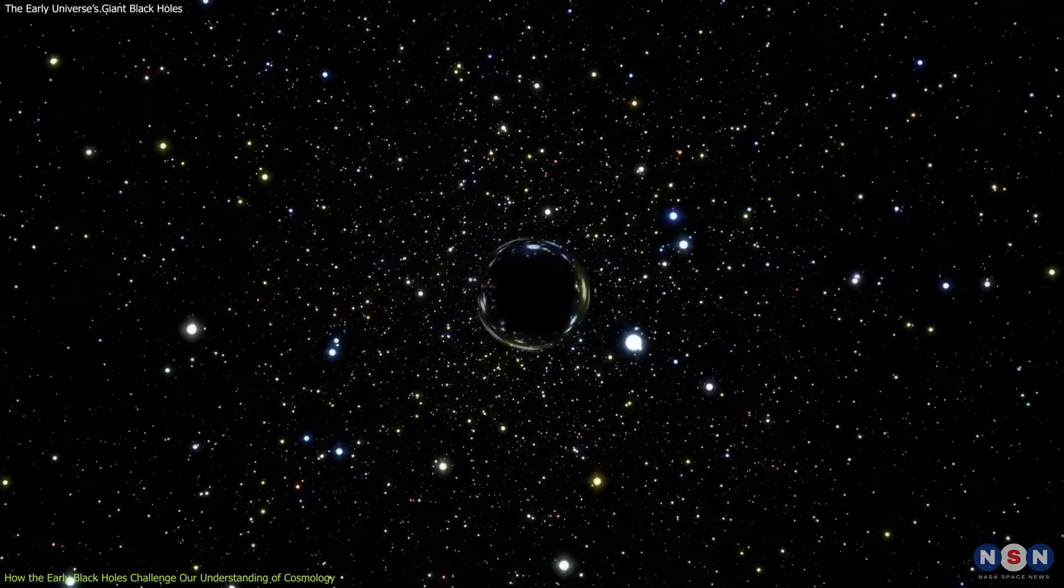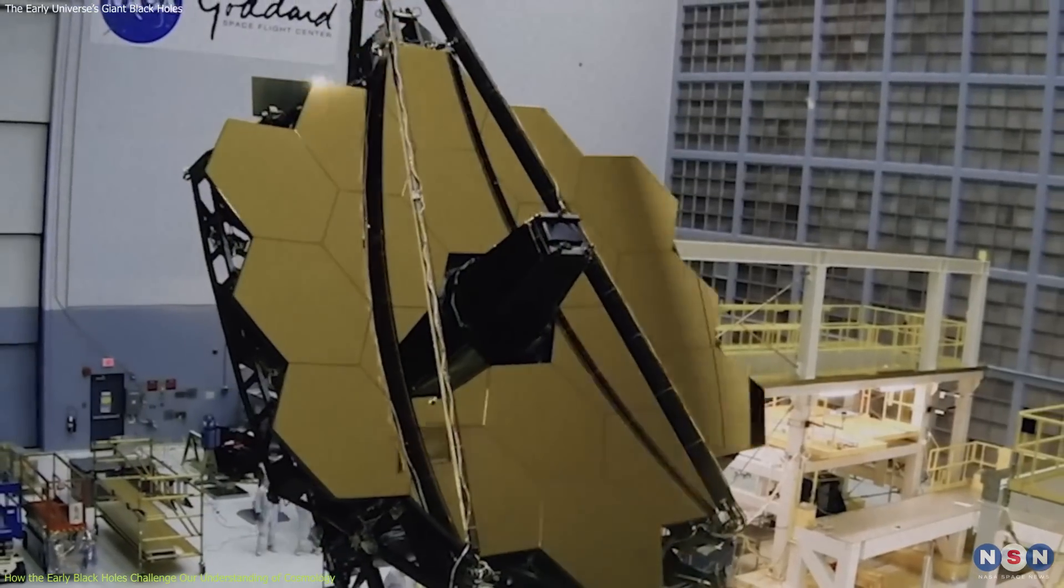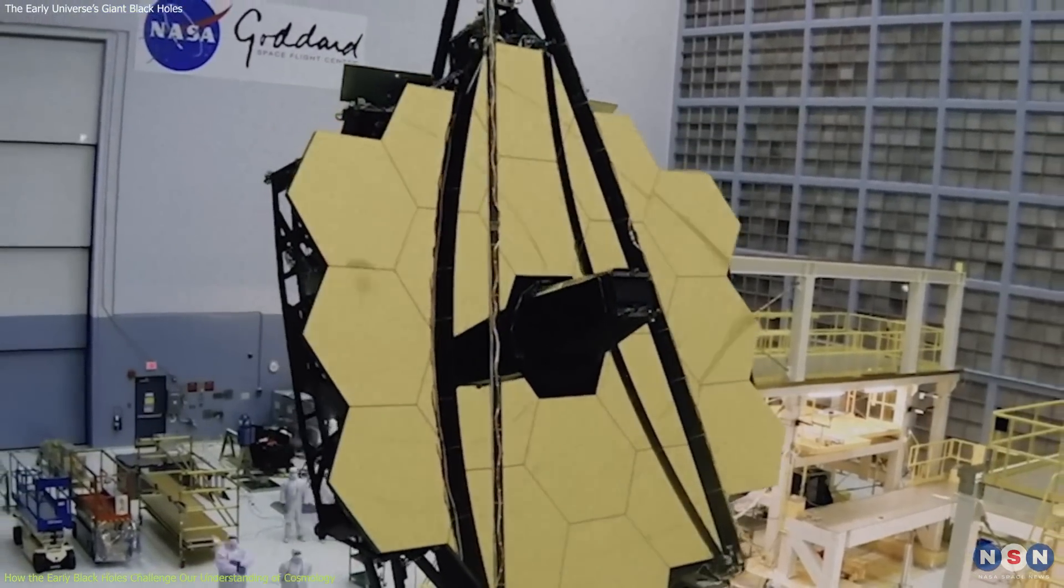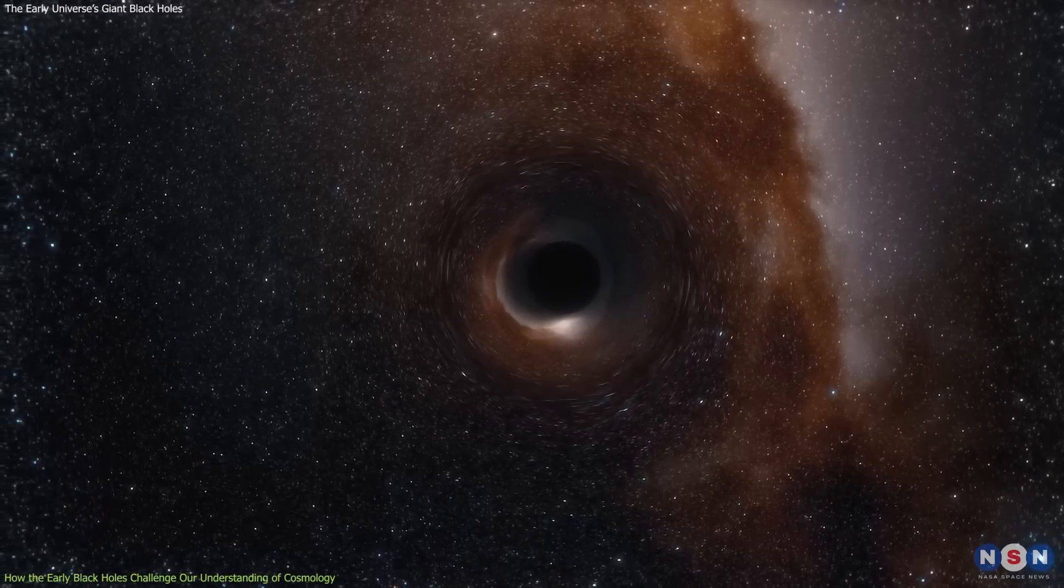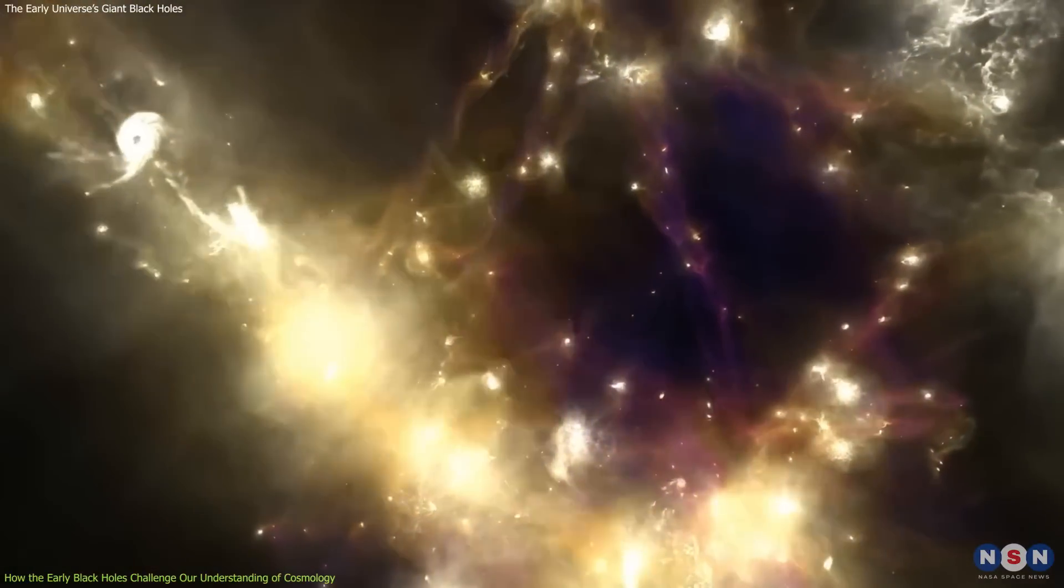By finding more intermediate-mass black holes in the early universe, Webb could provide clues about their origin and evolution. For example, Webb could measure their masses, spins, and temperatures, which could reveal how they formed and grew.